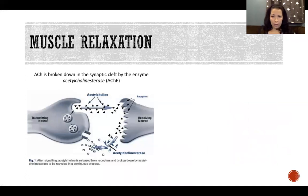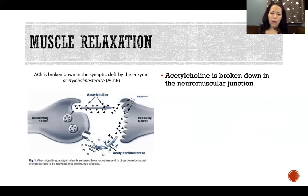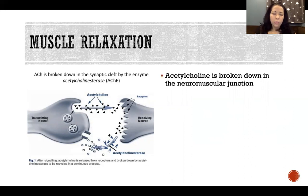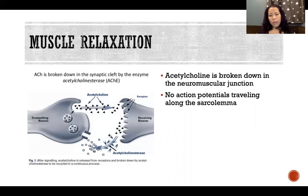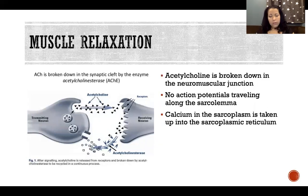When we don't have an action potential anymore and we want the muscle to relax, the motor neurons stop sending an action potential. We no longer have acetylcholine being released into the neuromuscular junction, and what is there gets broken down. The acetylcholine gets broken down, taken back up by the cell, or drifts away — in any case, there's no more acetylcholine at the neuromuscular junction. This means we're no longer triggering an action potential in the muscle, and there's no more action potential traveling along the sarcolemma. As a result, the calcium in the sarcoplasm gets taken back up into the sarcoplasmic reticulum.